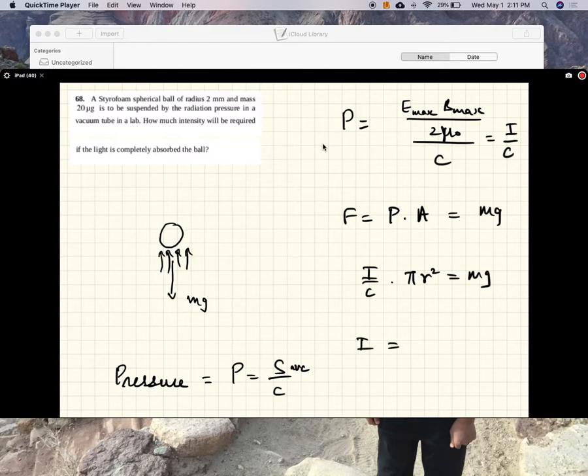So I, the intensity required, is the weight of the styrofoam ball times the speed of light divided by the area of cross-section of the styrofoam ball.